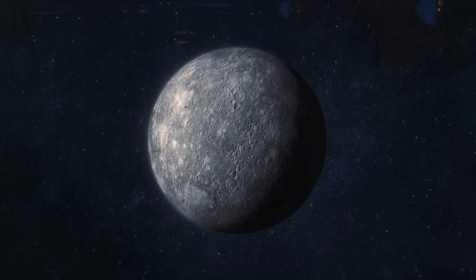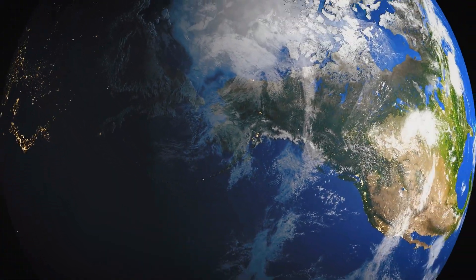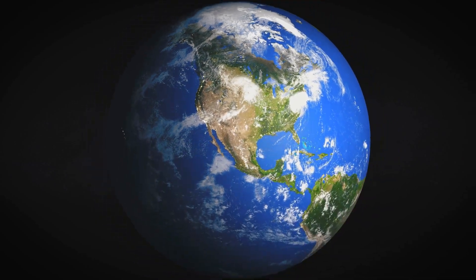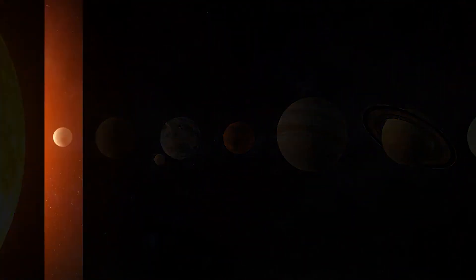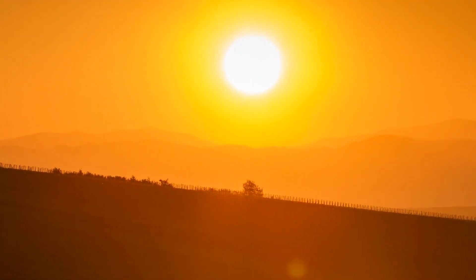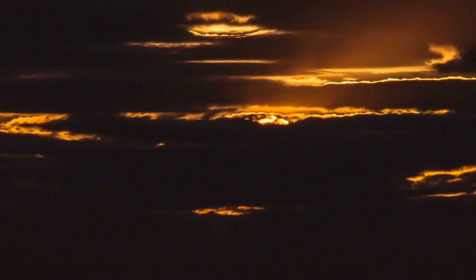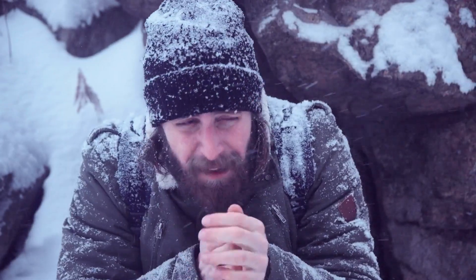Well, it's all due to Mercury's lack of a substantial atmosphere. Unlike Earth, which has an atmosphere to trap heat, Mercury's thin atmosphere can't hold on to warmth. So as soon as the sun's intense rays hit its surface, temperatures soar. And when the sun goes away, there's no insulation to keep the planet warm, leading to those bone-chilling nighttime conditions.